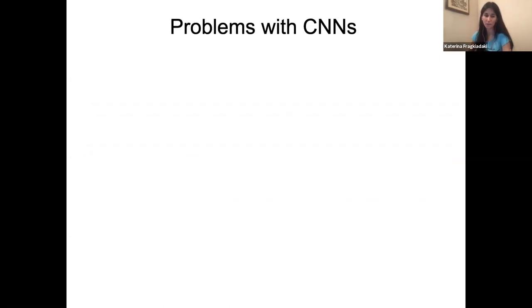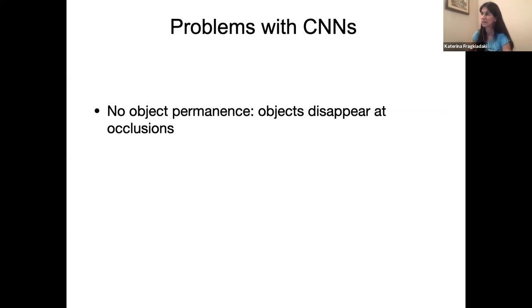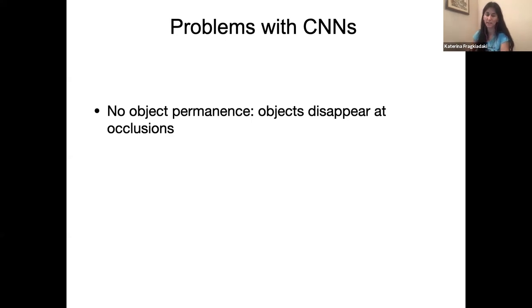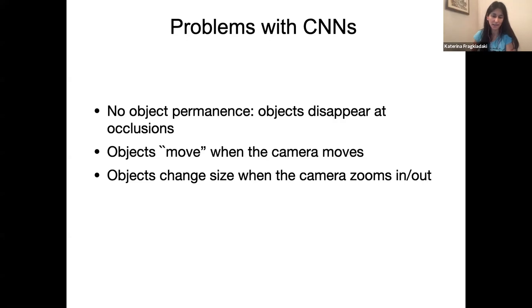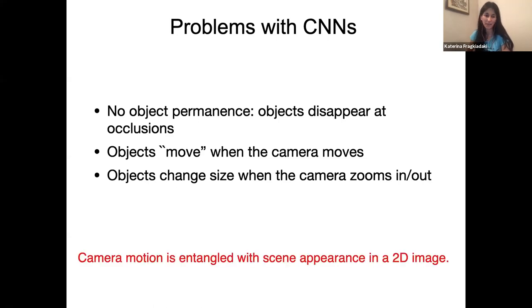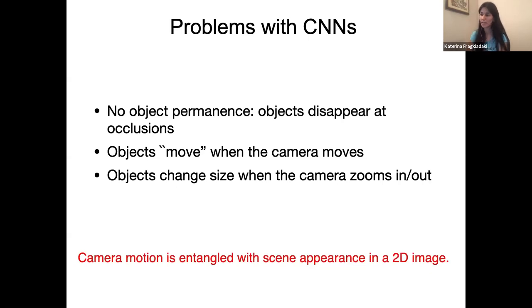There are problems with vanilla CNNs: if you apply a visual recognizer at every frame, objects come in and out of the field of view, disappear when occluded, you don't know when the camera is moving versus when objects are moving, and objects change size because the camera moves in and out. LSTMs also don't make sense for visual recognition under a moving camera. The big challenge is that what you see in a video is an entanglement of what the 3D scene looks like and how the camera moves.